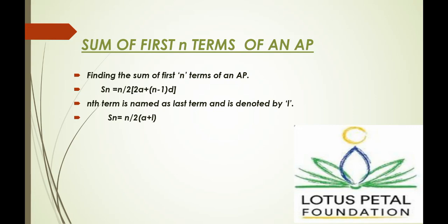Sum of first n terms of an AP. Finding the sum of first n terms of an AP, there is a formula, which is Sn is equal to n upon 2 bracket 2a plus bracket n minus 1 bracket d bracket.